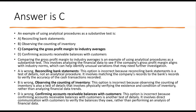The answer is C. Comparing the gross profit margin to industry averages is an example of using analytical procedures as a substantive test — it involves analyzing financial data to see if the company's gross profit margin aligns with industry norms, which can help identify unusual variations. Reconciling bank statements and observing the counting of inventory are tests of details. Confirming accounts receivable balances with customers is also a test of details involving direct communication with customers to verify balances owed.